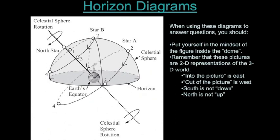Into the paper or into the screen is east, because if you're facing north and turn to the right, that would be east. And out of the screen or out of the paper would be west.